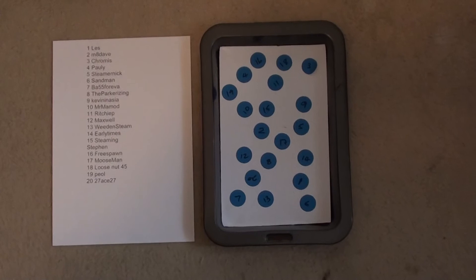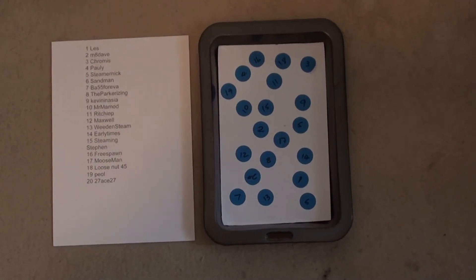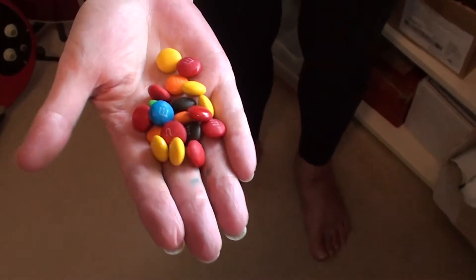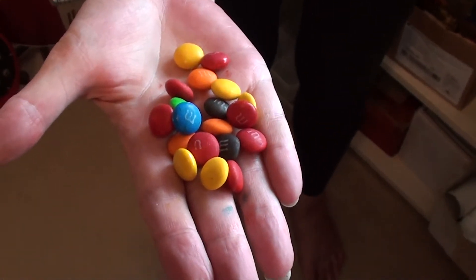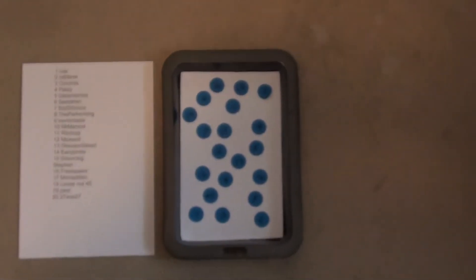The number which is nearest to the one and only blue M&M—and here are the M&Ms, just one blue one in there—the one that's closest to the blue M&M is going to be the winner. And the winners are all listed down on the left-hand side.